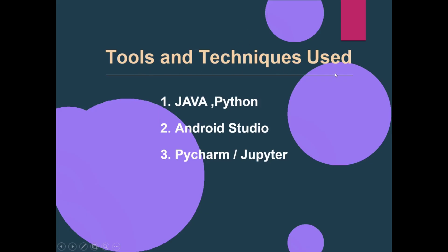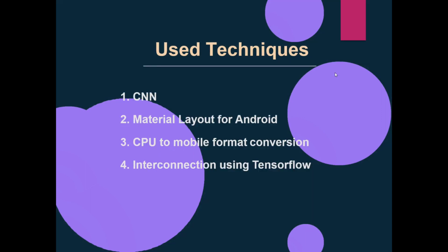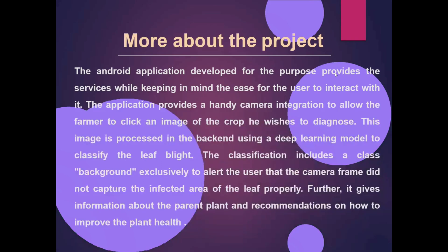Here are the tools and techniques used. First, Java; second, Android Studio; third, PyCharm or Jupyter. The techniques used are: first, CNN — Convolutional Neural Network; second, material layout for Android; third, CPU to mobile format conversion; fourth, interconnection using TensorFlow.